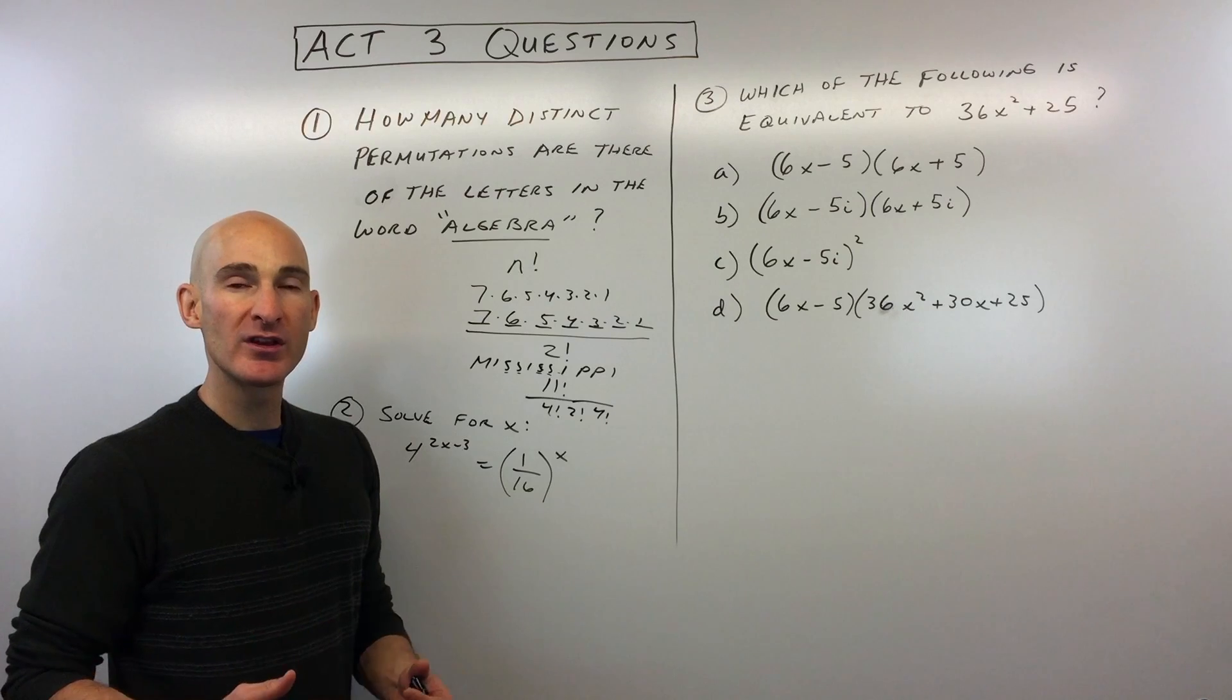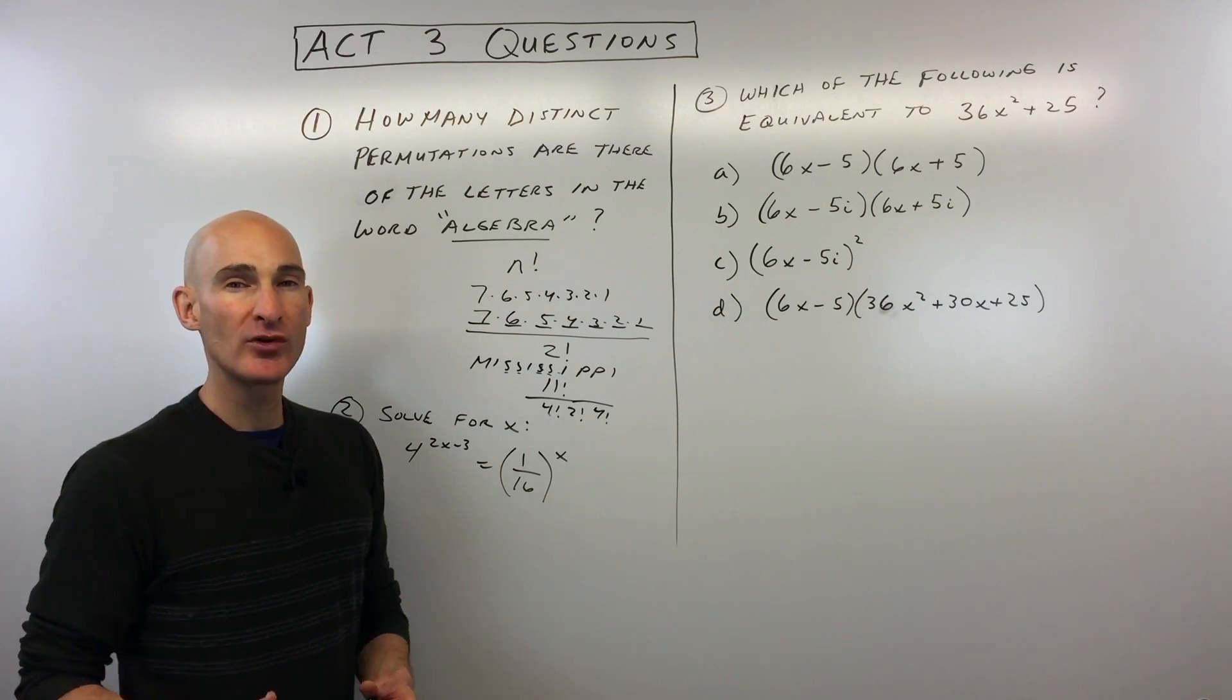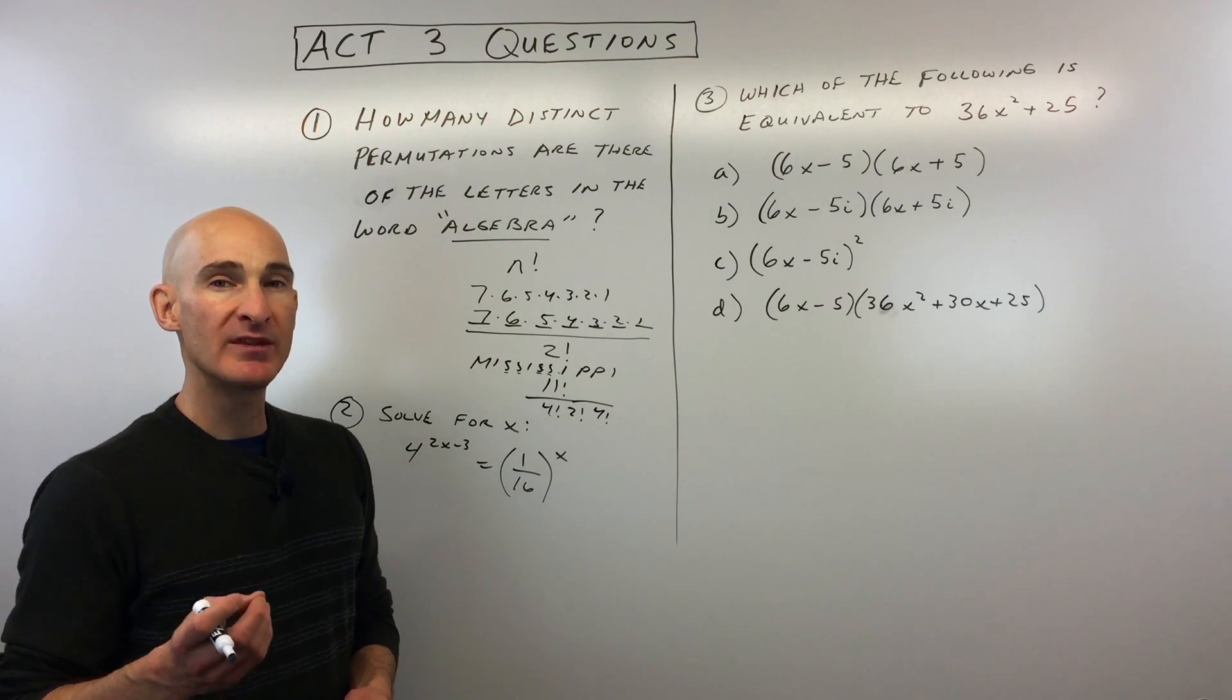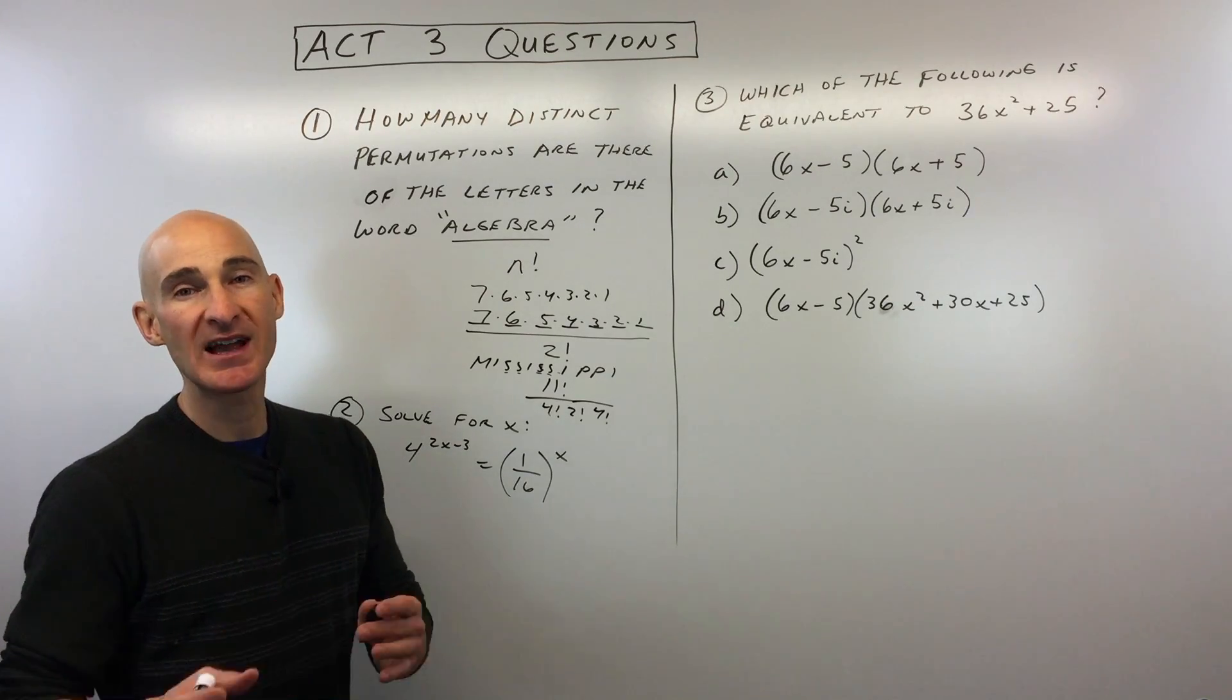We've got four to the two X minus three equals one sixteenth to the X power. All right, so you might be thinking logarithms, you might be thinking rules of exponents, different things might be going through your mind right now, but I'll show you the key in this problem, and that's to get the same base on both sides of the equation.